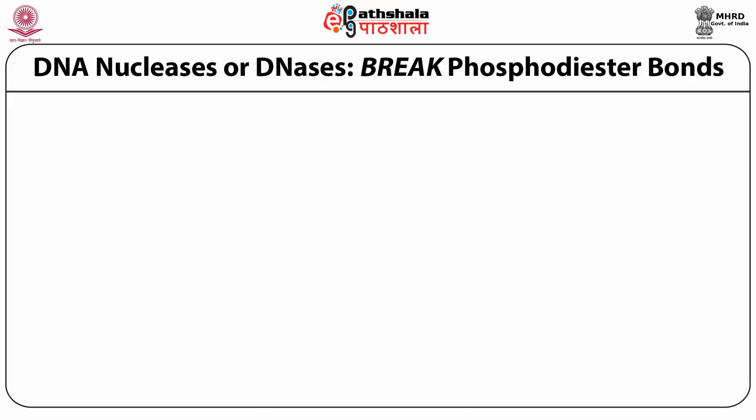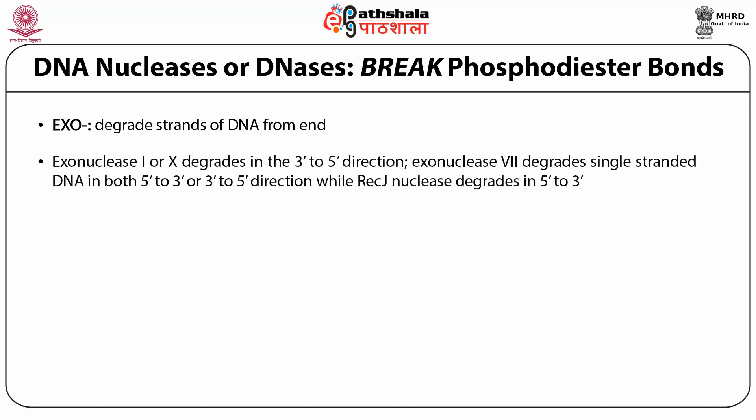Let's start with DNA Nucleases or DNases. These are enzymes that break phosphodiester bonds. They are categorized into multiple categories based upon where they make that cut. Exonucleases degrade the strands of DNA from one end. Examples are Exonuclease 1 or 10 that degrades in the 3' to 5' direction, and Exonuclease 7 that degrades single-stranded DNA in both 5' to 3' or 3' to 5' directions, while RecJ Nuclease degrades DNA in the 5' to 3' direction only.